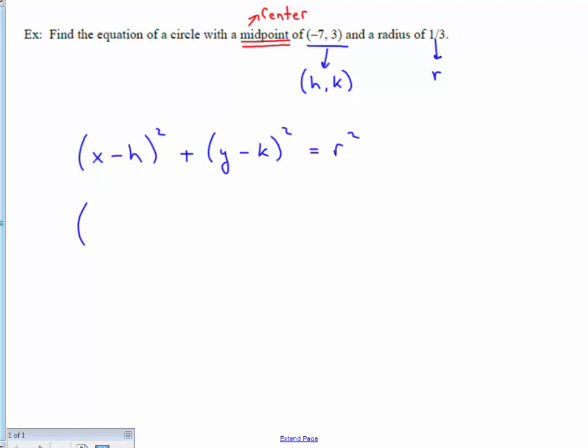In the equation of a circle, you always want to keep X and Y as a variable. So we'll have X, and then for the minus H part, we know that our H value is the negative 7 that's up above. The formula has a negative in it, and so it'll be X minus negative, negative 7 squared plus,